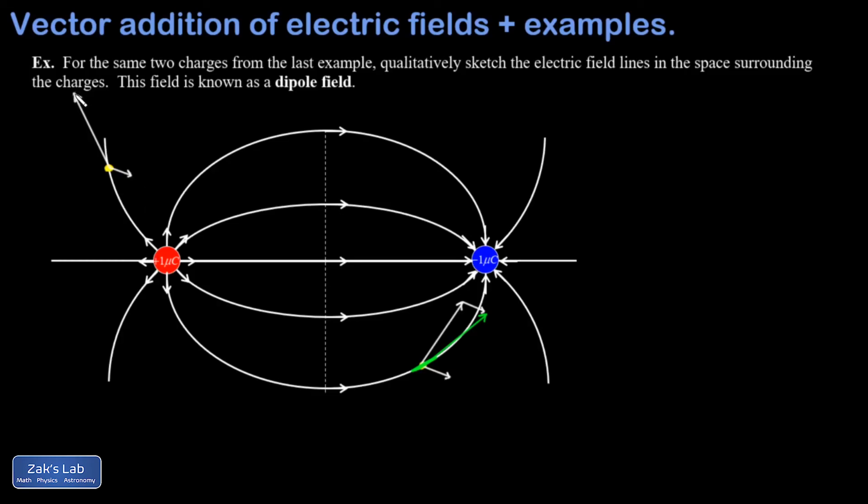I'm going to pick up that second vector and tack it onto the head of the first vector, something like this. And then when I look at the vector sum, it goes from the tail of the first to the head of the second. And I can see it's pretty much parallel to the electric field line that I had drawn there.